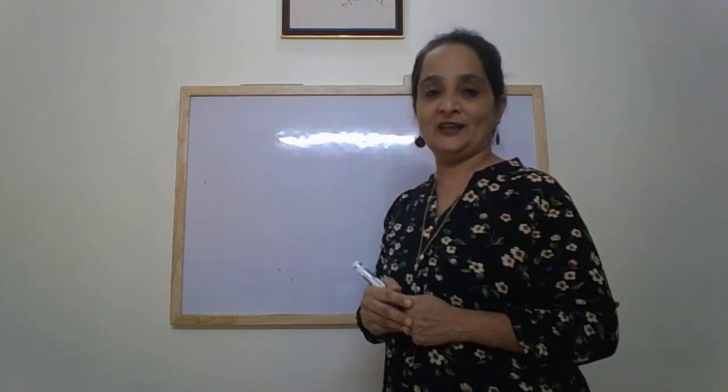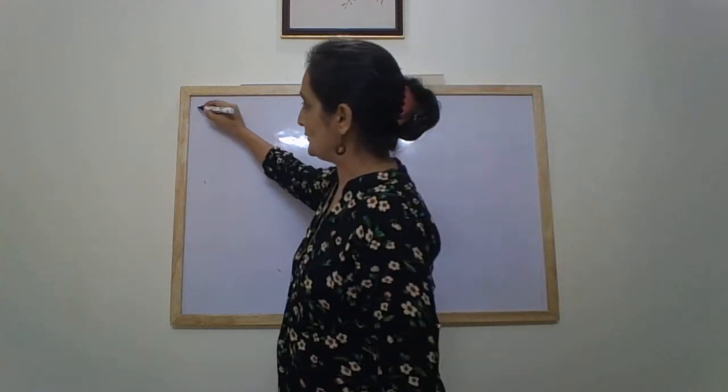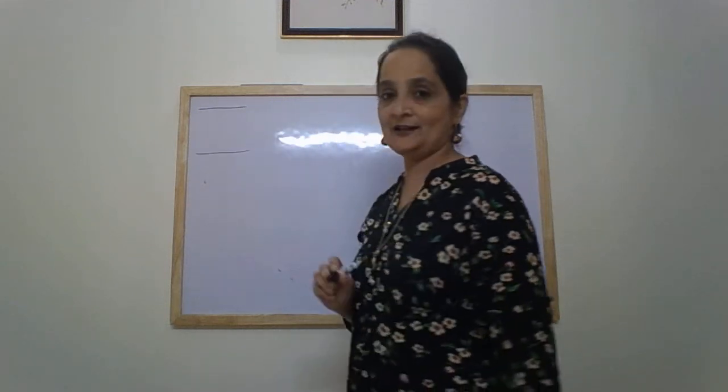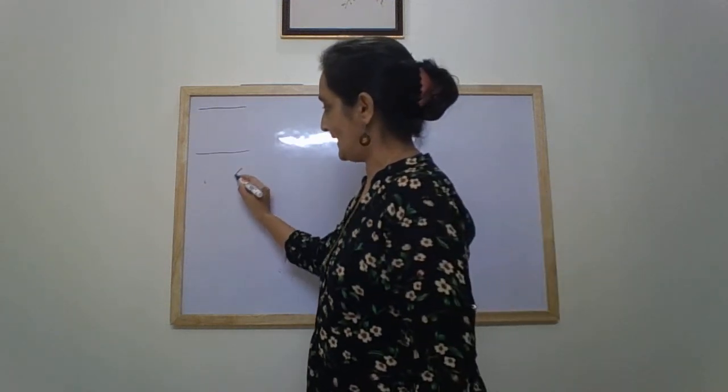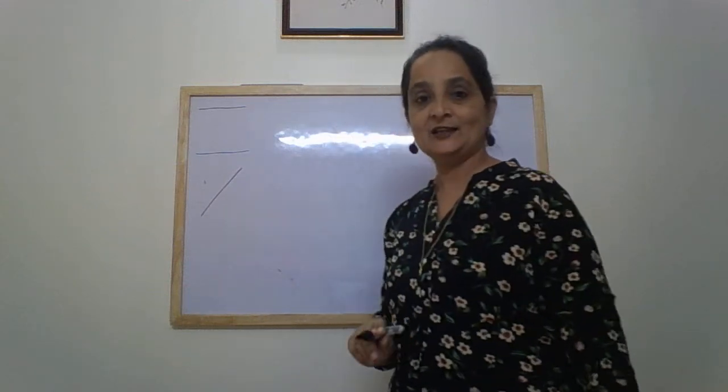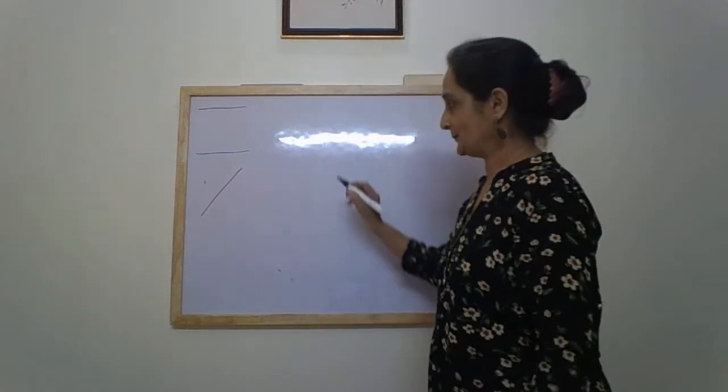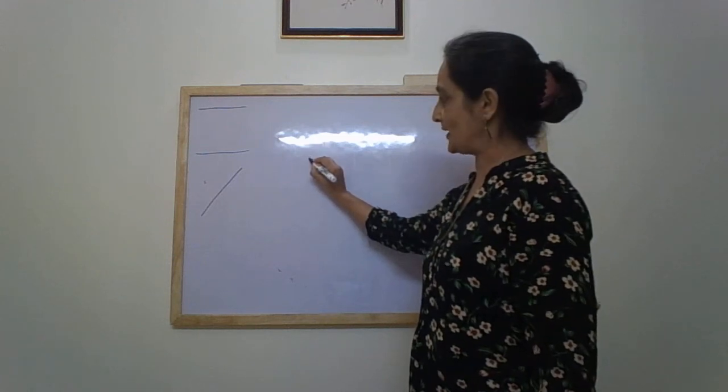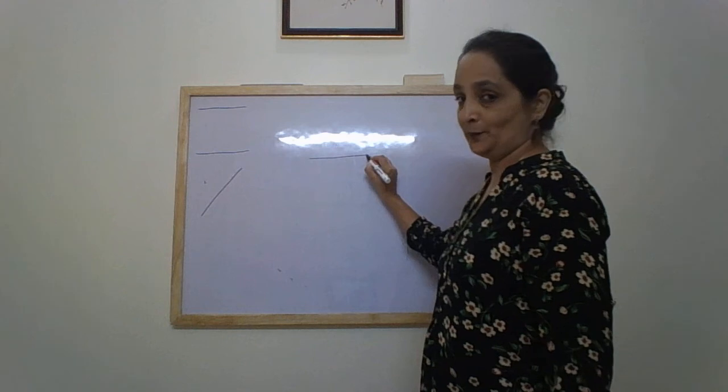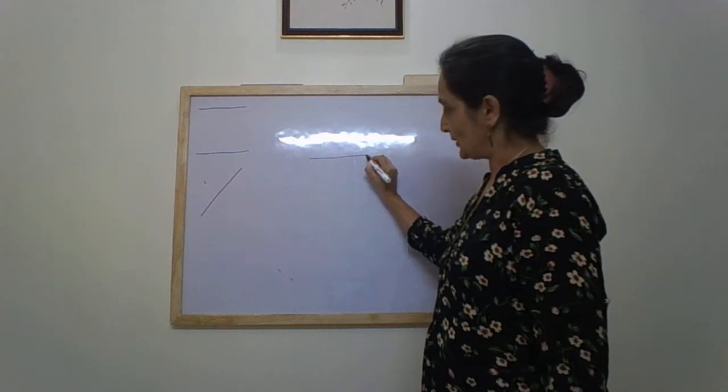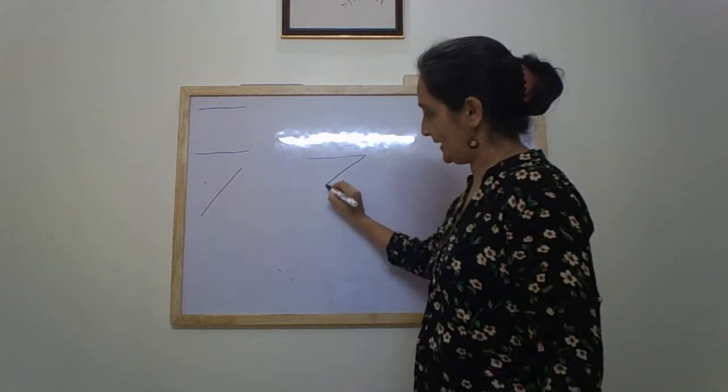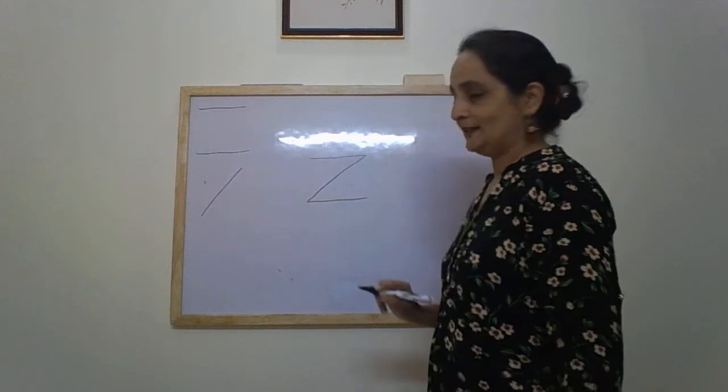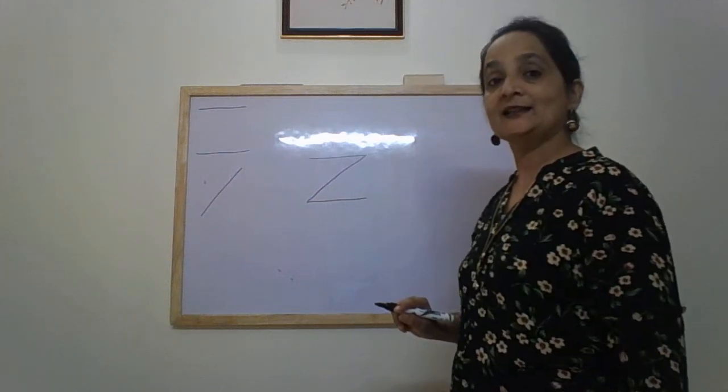And it is formed with two sleeping lines and one slanting line. Alright, so let's see how to write it. Keep your crayon. Make a straight sleeping line. Don't pick up your crayon. Go slanting down and back again. This is letter Z.